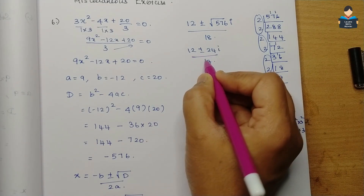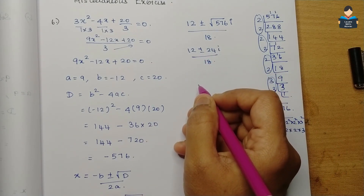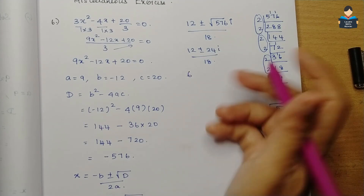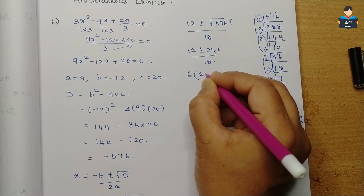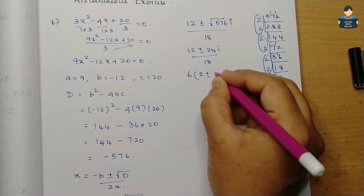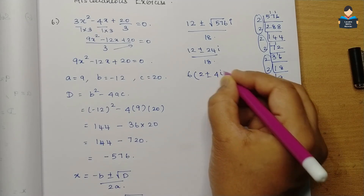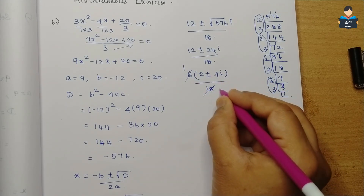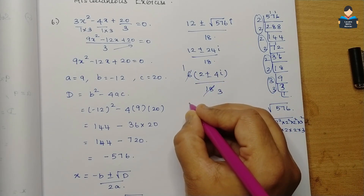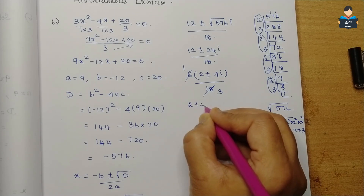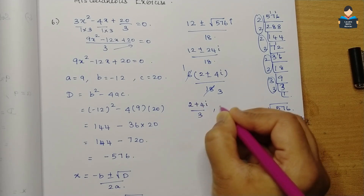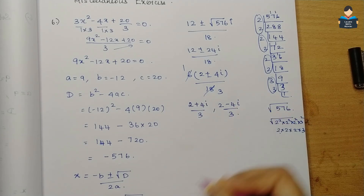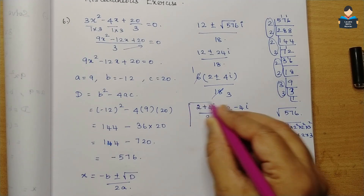Dividing numerator and denominator by 6: x = (2 ± 4i) / 3. So the two solutions are x = (2 + 4i)/3 and x = (2 - 4i)/3. That is our answer for question 6.